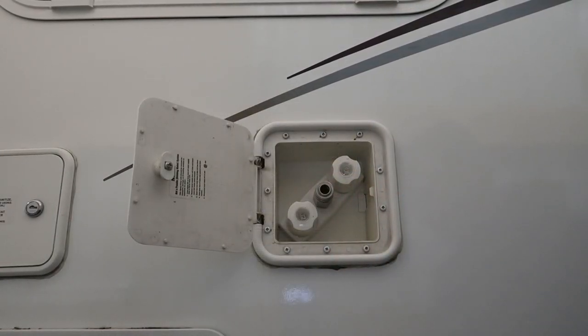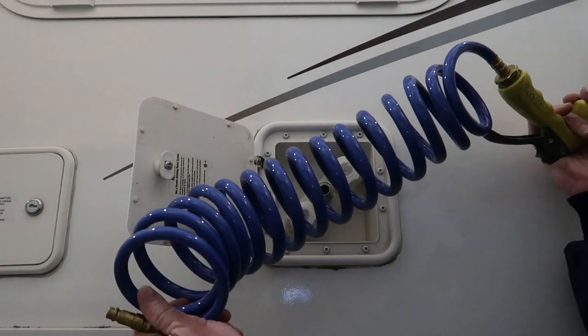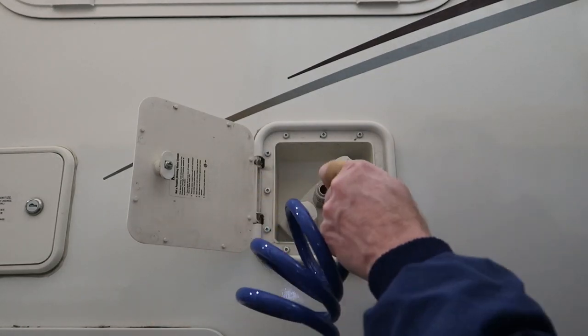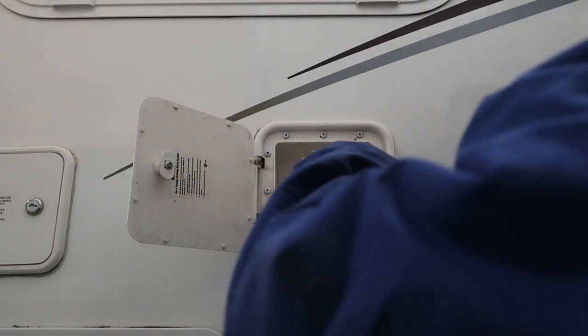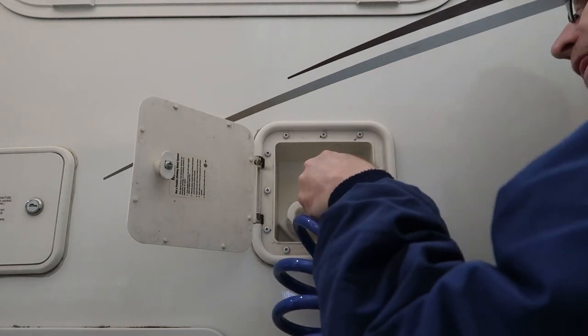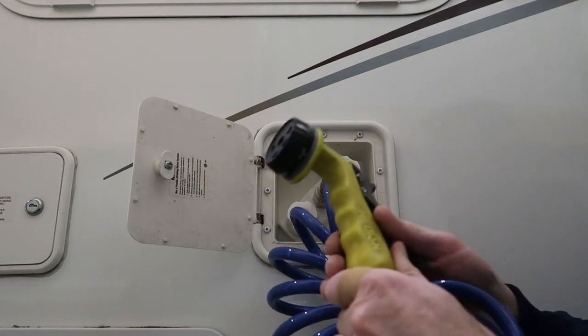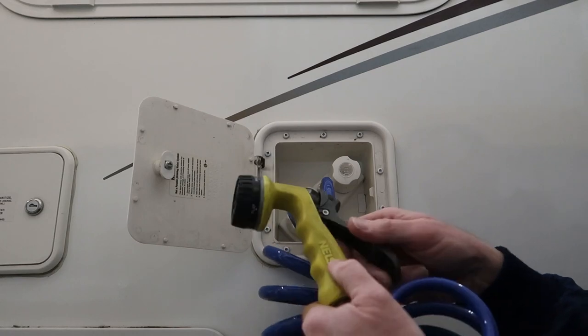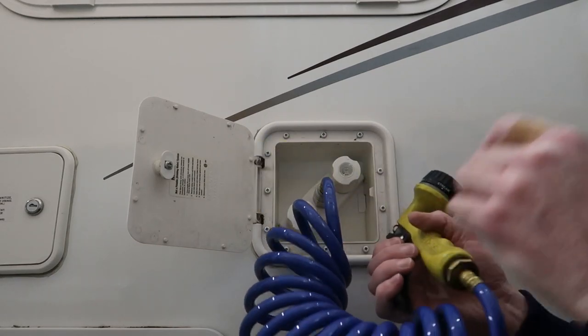I'll show you the hose that comes with the camper. It's a blue coiled hose with a quick disconnect fitting on the end and you just plug it in. And then the hose also includes a nozzle. This is not the nozzle that came with the camper.